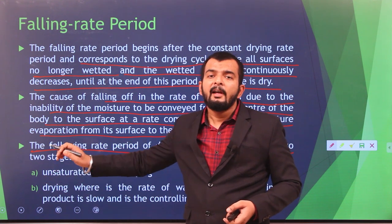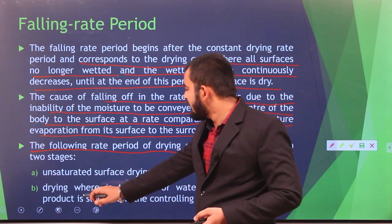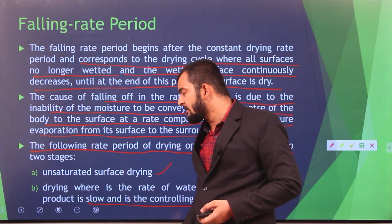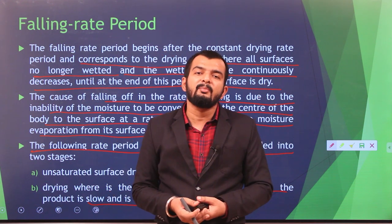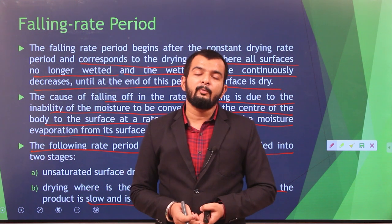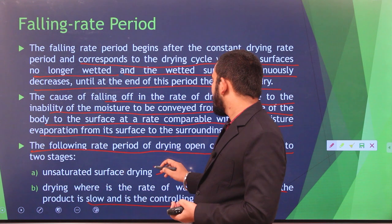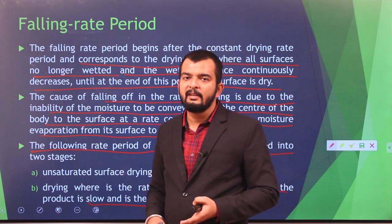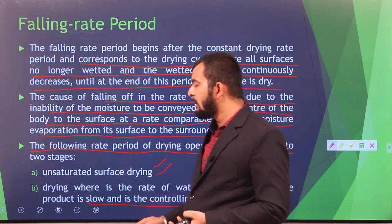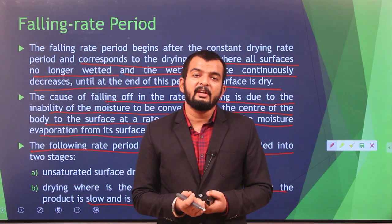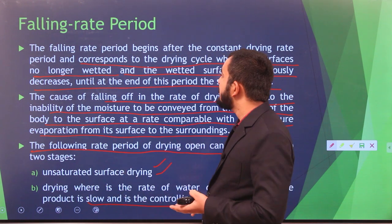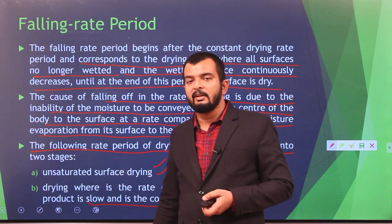The falling rate period has two stages: first is unsaturated surface drying, where the rate of migration of moisture to the surface has declined and is less than the rate of evaporation from the surface; second is when the rate of water diffusion within the product is slow and becomes the controlling factor — there is limited water available, not enough moisture to migrate to the surface, and the drying rate falls drastically.